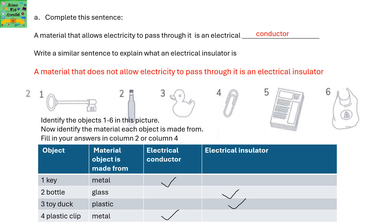Now identify objects 1 to 6 and identify the material each object is made from. Fill in your answers in column 2 or column 4. The first one is a key — it's made of metal, so it's an electrical conductor.